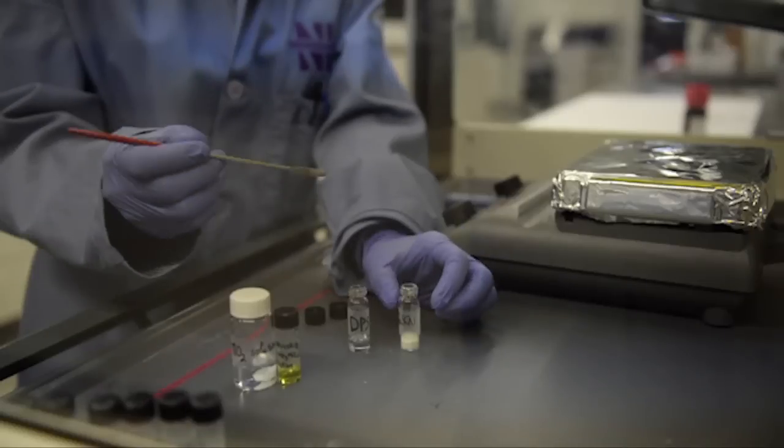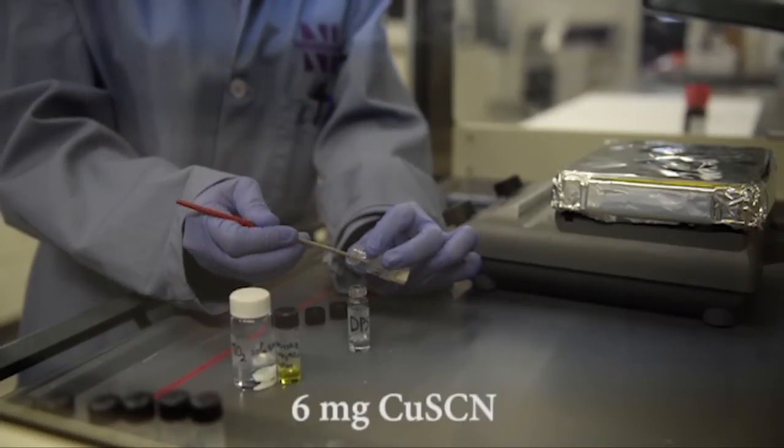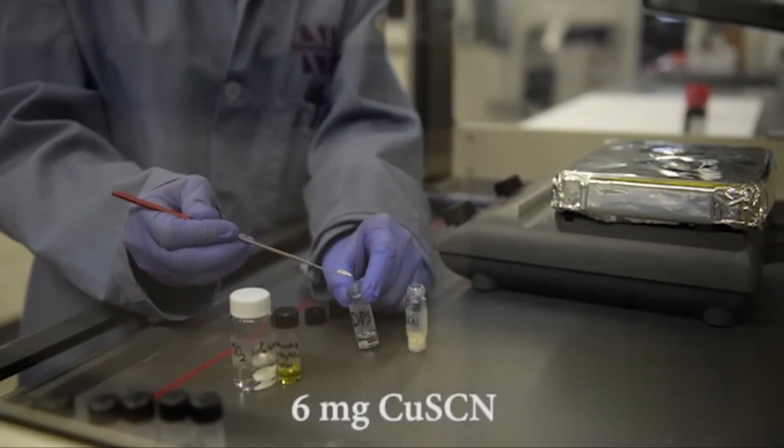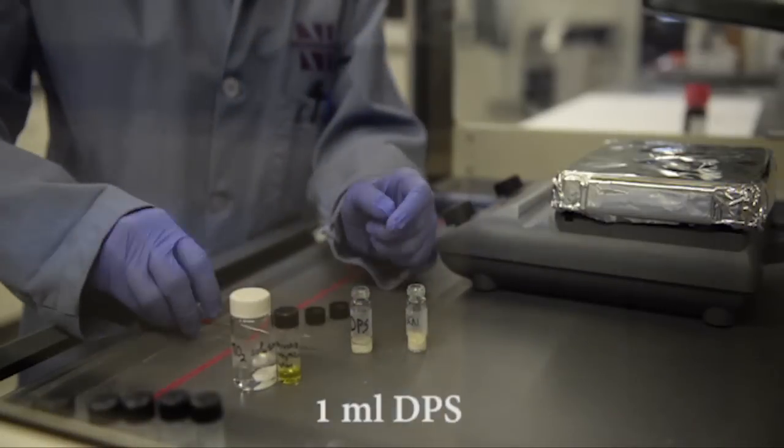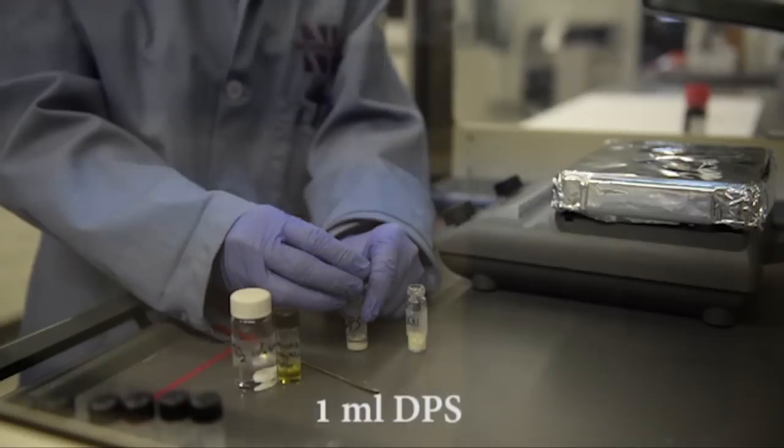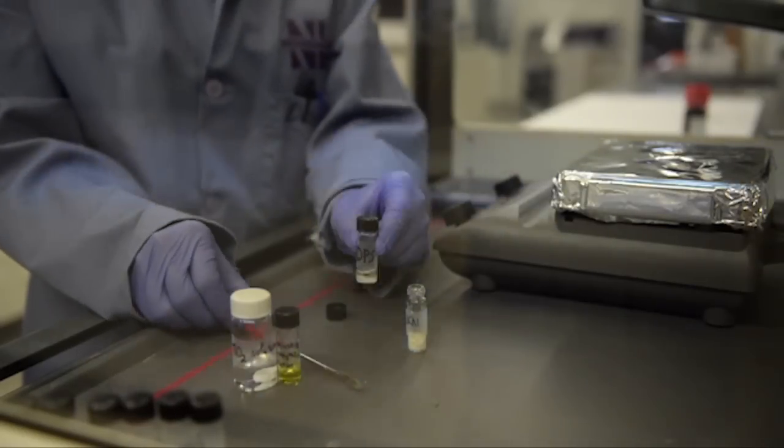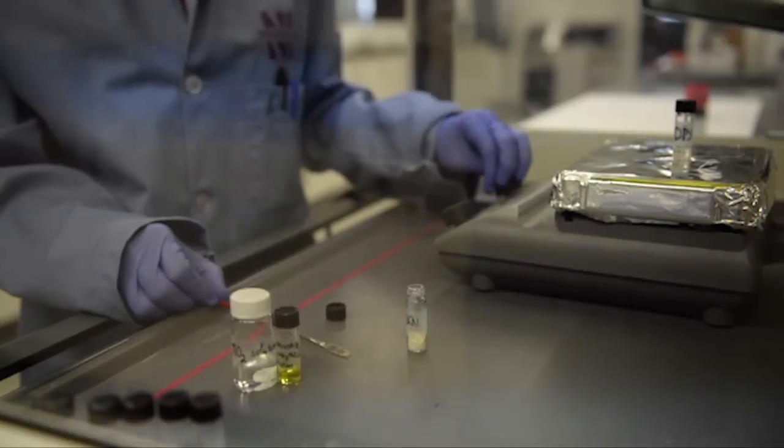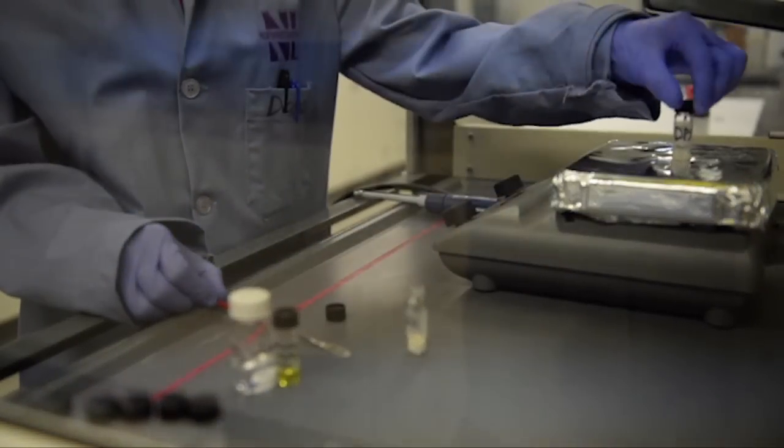Lastly, we will make a 0.05 molar copper thiocyanate solution by stirring 6 milligrams of copper thiocyanate powder in one milliliter of dipropyl sulfide solvent at room temperature overnight. The final solution should look colorless and transparent.